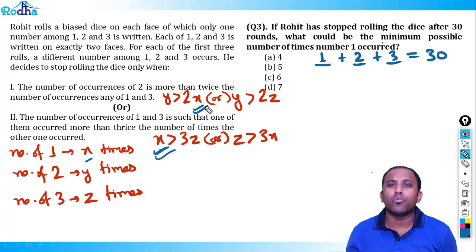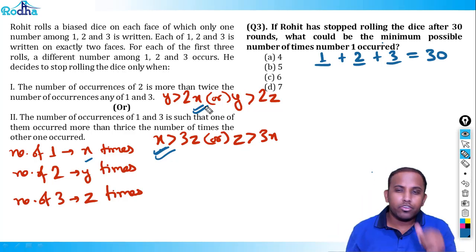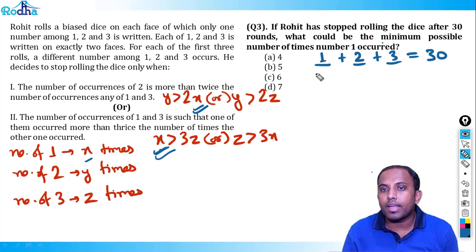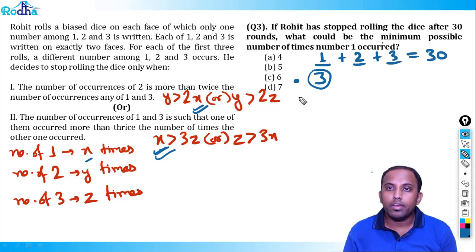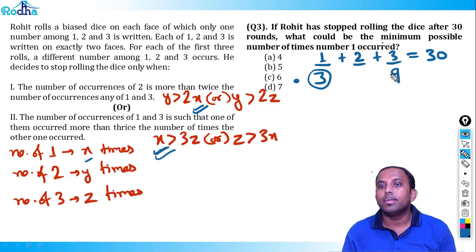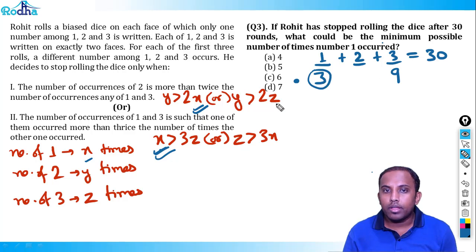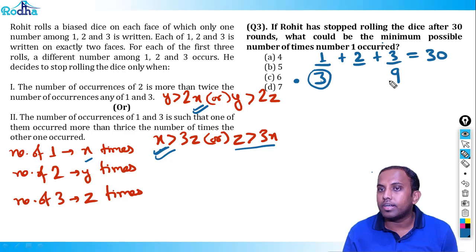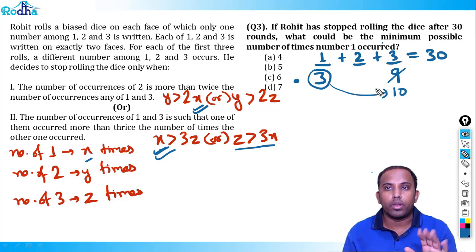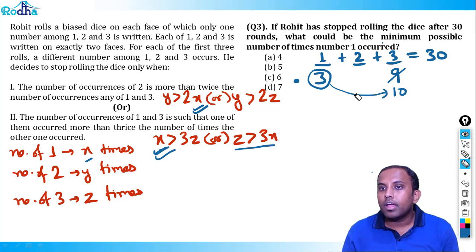Now let's move to question 4. If the last 10 rolls when the rolling stopped all resulted in 2, what is the minimum possible total number of rolls? So the last 10 rolls are all 2s. We need to minimize x + y + z, knowing that the first three rolls each show a different number among 1, 2, 3 — so x ≥ 1, y ≥ 1, z ≥ 1 from the start.